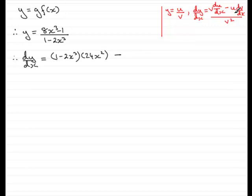and then we've got u dv dx, which is essentially the top, multiplied by the differential of the bottom. So differentiating the bottom, we get minus 6x squared. And it's all divided by v squared, or essentially the square of the denominator. So 1 minus 2x cubed, all squared.